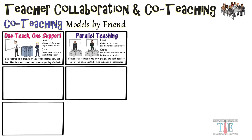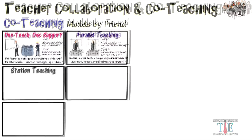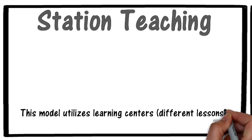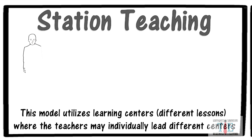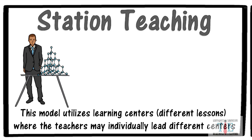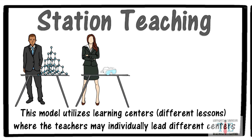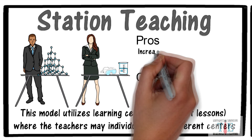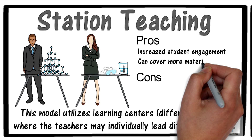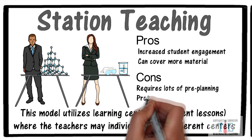The next model is Stations Teaching. This model utilizes learning centers with different lessons, where teachers may individually lead different centers. For example, two stations could include one with a chemical structure model and another where a lab demo is taking place — though you can have three, four, or five stations. A big positive is increased student engagement, and teachers can cover more material in a shorter time. Negatives are that it requires lots of pre-planning and problems with timing often occur.